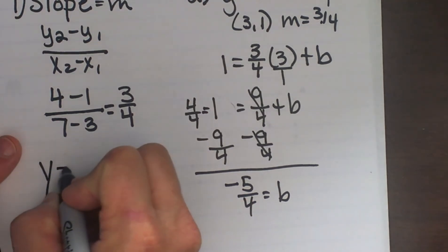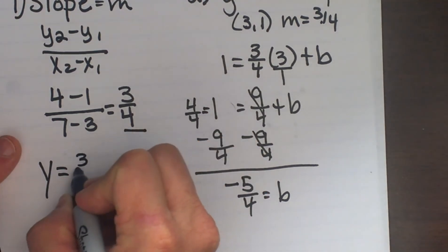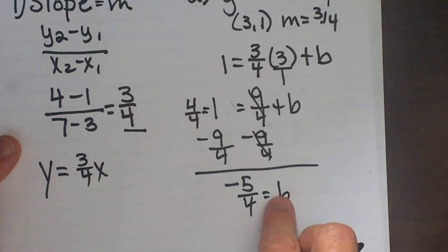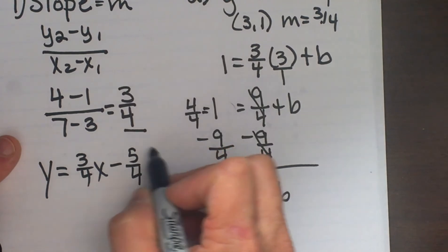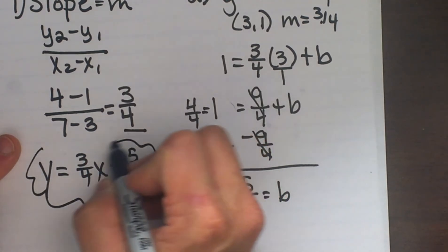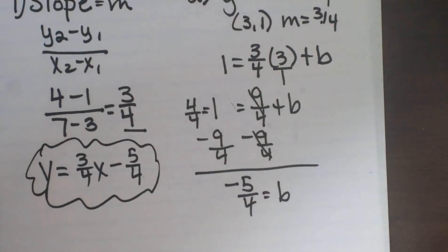So I plug in y equals, and my slope is 3/4. Leave the x as your variable, and then plug in b as negative 5/4. And that is how you write the equation of a line given two points.